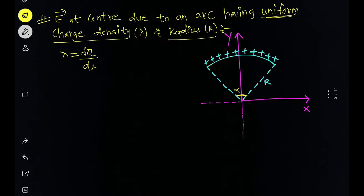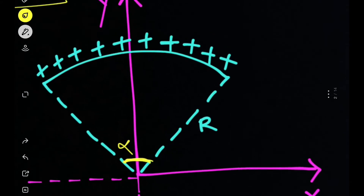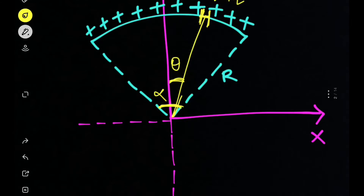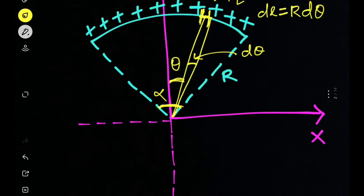We have to find the net electric field at the center. Let's consider a small part of this arc with length dl and charge dq. The angle this small element makes with the y-axis is theta. Since this small length subtends a small angle dθ at the center, from arc length calculation we can write dl = r·dθ.